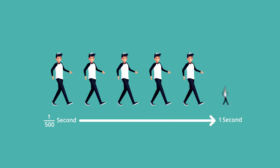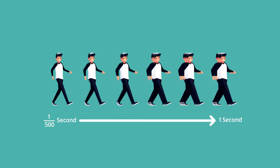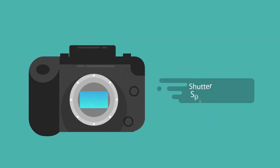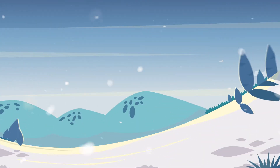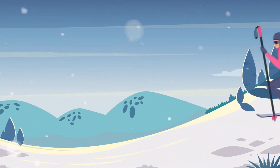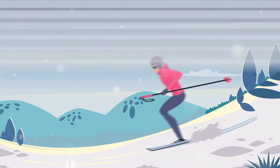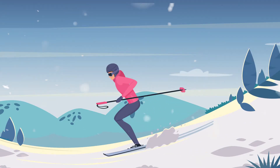Different shutter speeds produce different types of effects in an image. When you use fast shutter speeds such as 1/500 or 1/1000, your camera's shutter closes before the sensor can record any motion. This freezes moving objects in place, capturing them in a way that would be impossible to see with the naked eye.